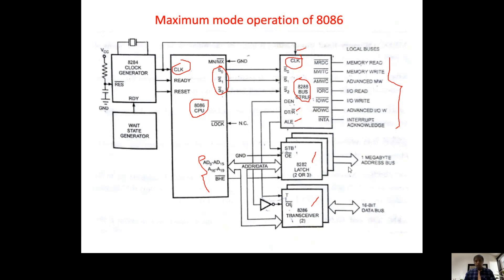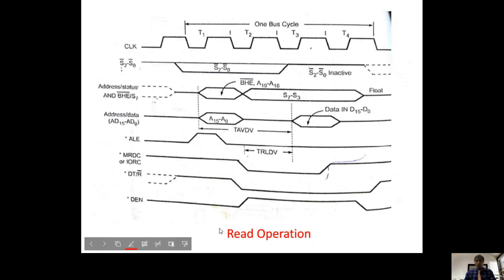For the timing diagram of 8086 in maximum mode, we need the ALE signal, multiplexed address and data lines, multiplexed address and status lines, BHE bar/S7, and clock. For memory operations we need memory read, memory write, or advanced memory write. For IO operations we need IO read, IO write, or advanced IO write. Additionally, DEN, DT/R bar, and ALE are required.